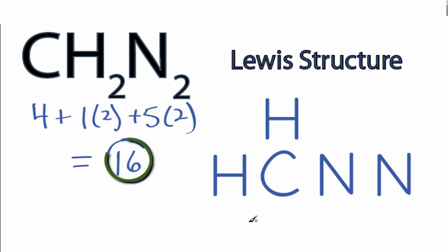We have 16 valence electrons for the CH2N2 Lewis structure. We'll put 2 between atoms to form chemical bonds. We've used 8, then around the nitrogen, 10, 12, 14, and we'll put the last 2 on this nitrogen here.